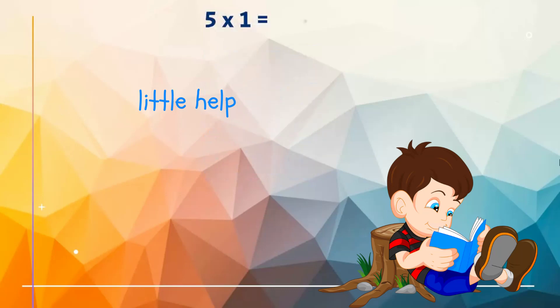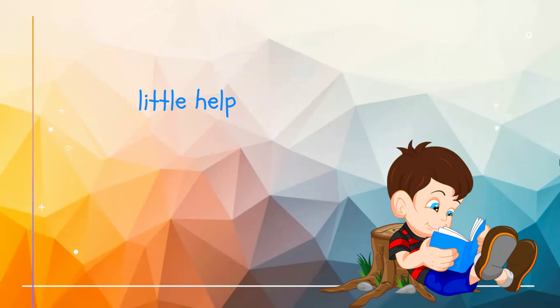Five ones are five. Five twos are ten. Five threes are fifteen. Five fours are twenty.